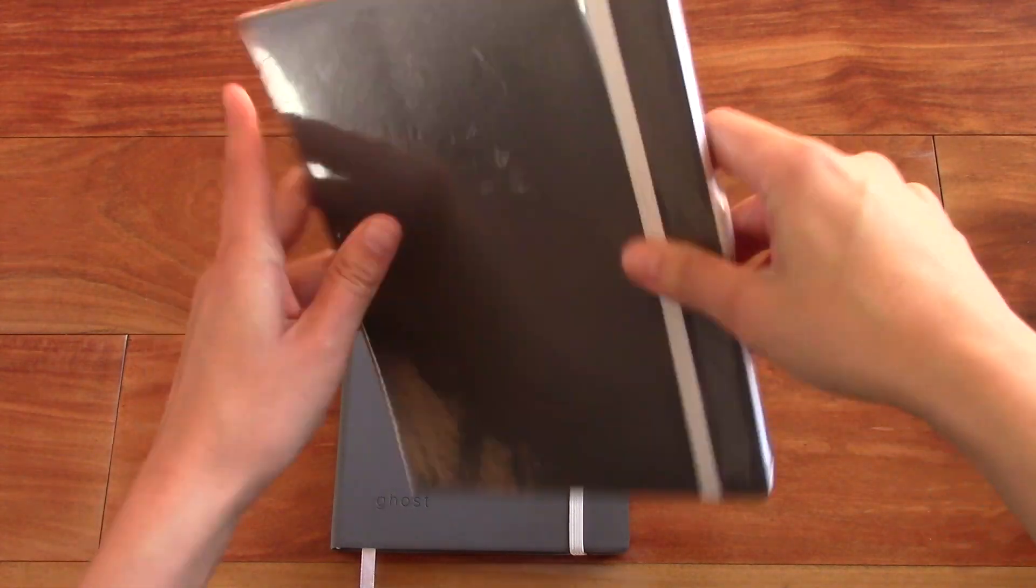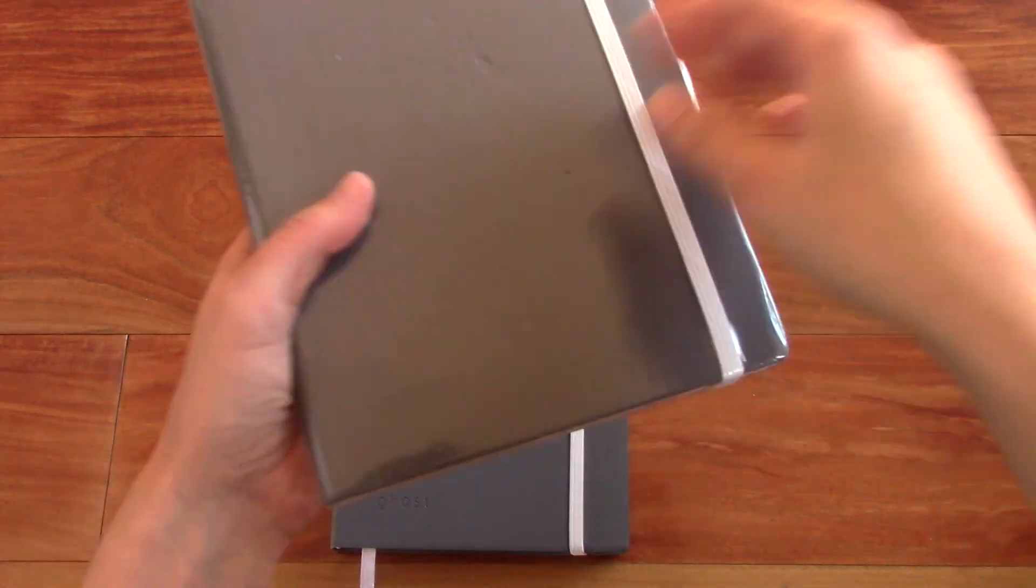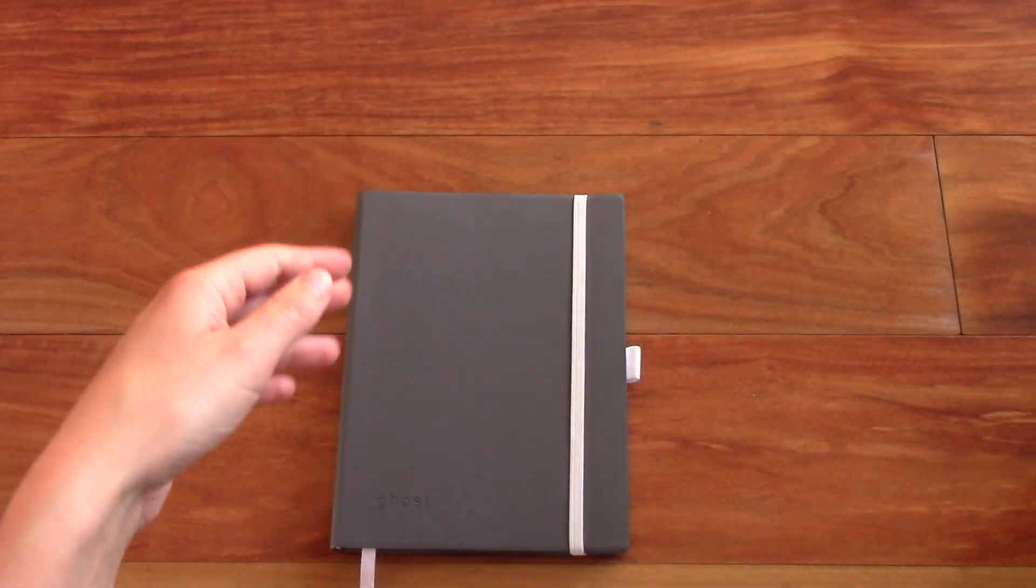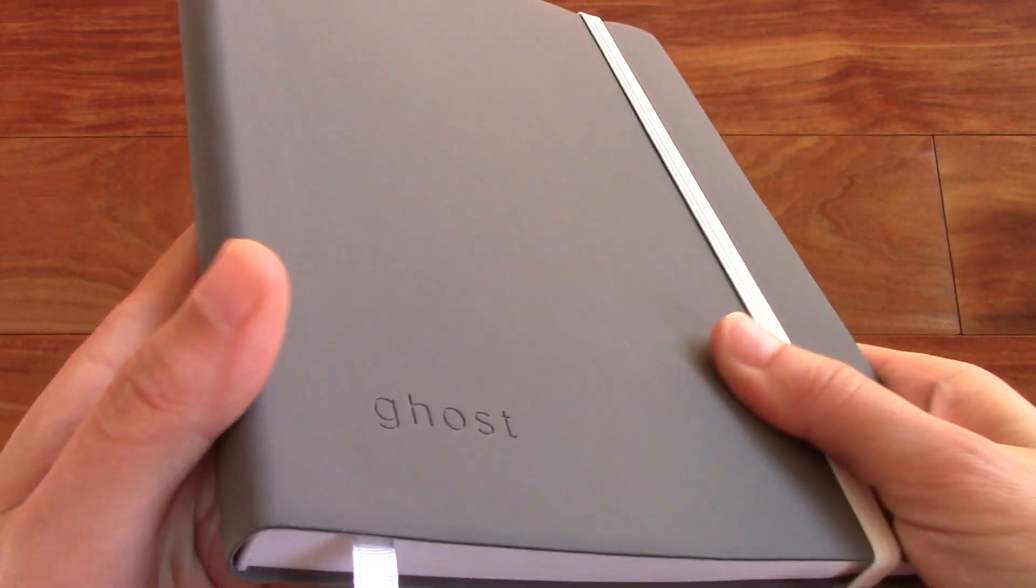But this is how it comes when you order it. It comes shrink wrapped, just to show you. And it is gray and it is faux leather, so PU leather.